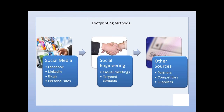People put all kinds of things on social media without really thinking about it — a lot of things they shouldn't — so it's a great source for footprinting. Social engineering is another method that involves direct contact with individuals that may work in an organization or are associated with it. This could be casual meetings in bars, or targeted contacts like pretending to be a salesperson making a sales call. You can use social engineering to get information about future products, network infrastructure, and security policies.